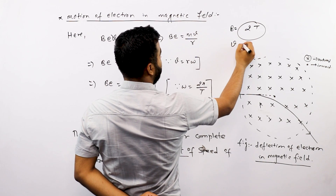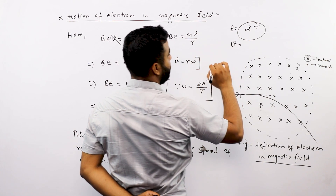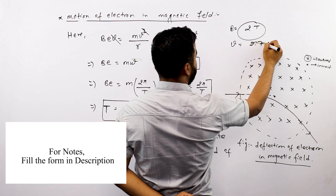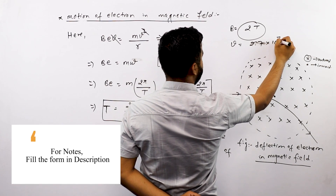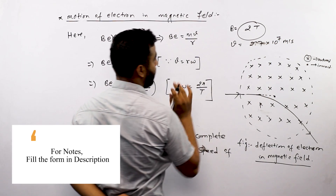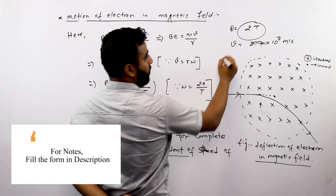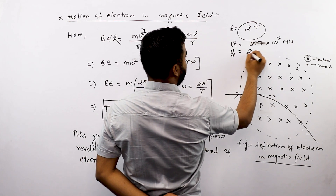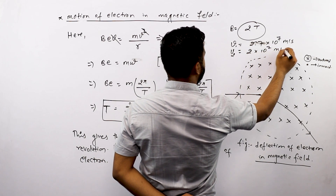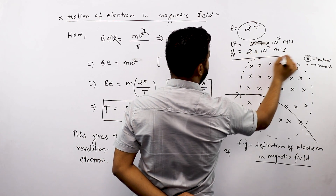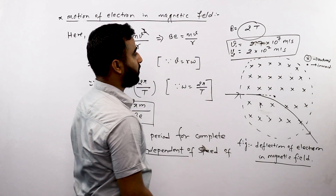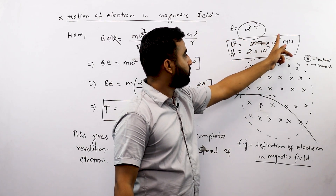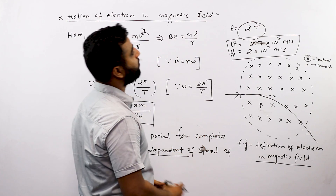For example, if the velocity of the electron is equal to 2.7 × 10⁷ metres per second, we can apply this formula to find the corresponding values.